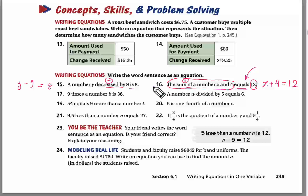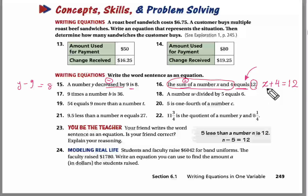Before we continue, what do we mean by 'equation'? Mustafa answered: it's two equal expressions. Excellent — an equation is a mathematical sentence in which we have two equal expressions. Every time, find the equal sign, find the first expression, and find the second expression.